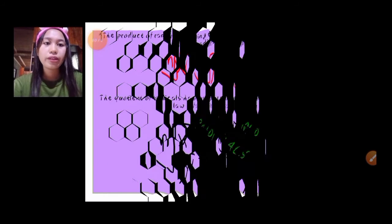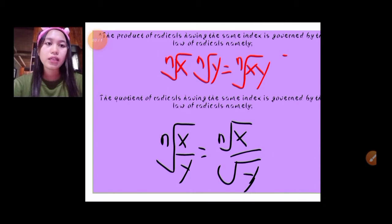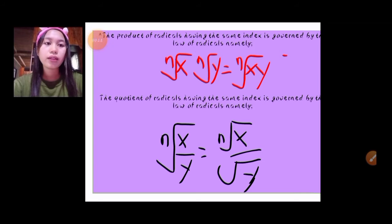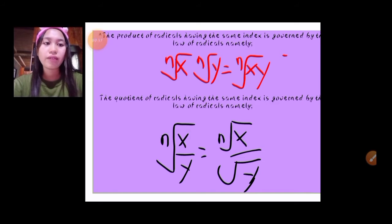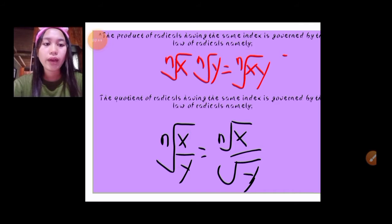When multiplying, the product of radicals having the same index is governed by the law of radicals, namely: n square root of x times n square root of y is equal to n square root of xy. When dividing, the quotient of radicals having the same index is governed by the law of radicals, namely: n square root of x over y is equal to n square root of x over n square root of y.